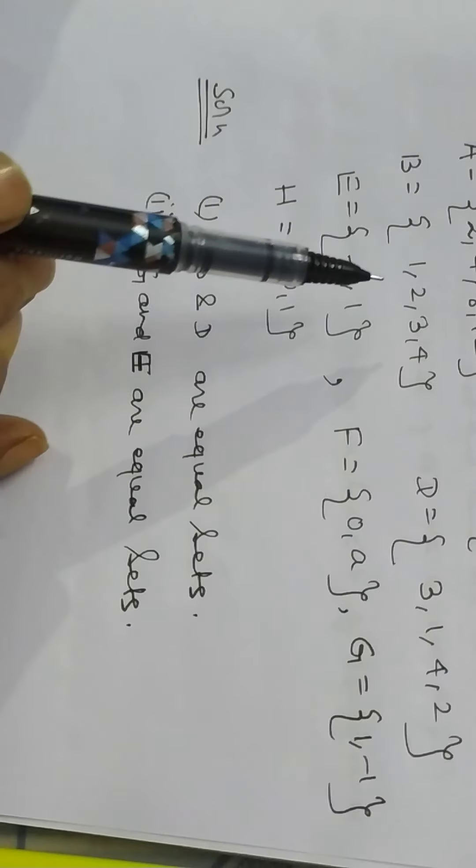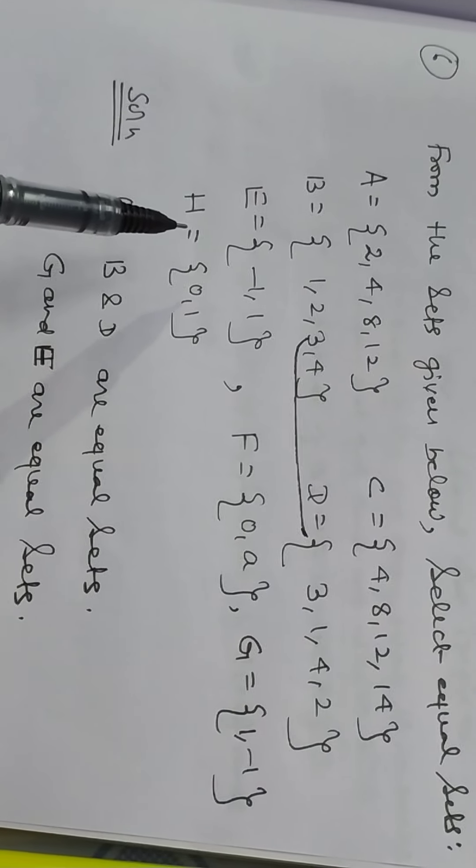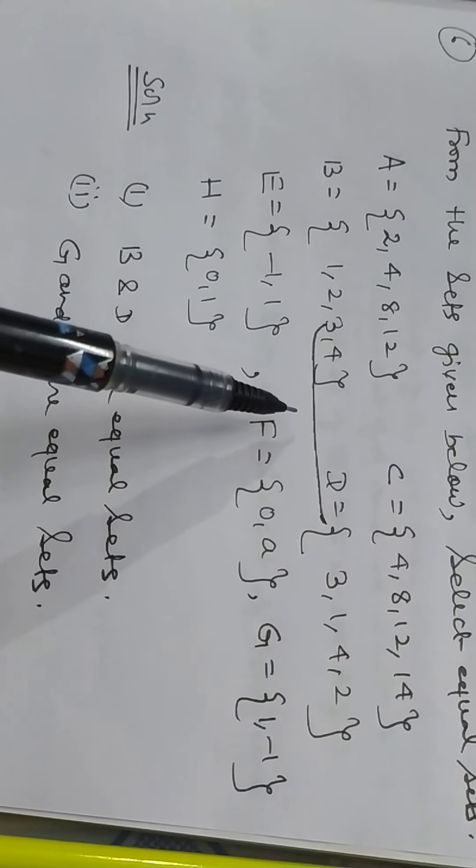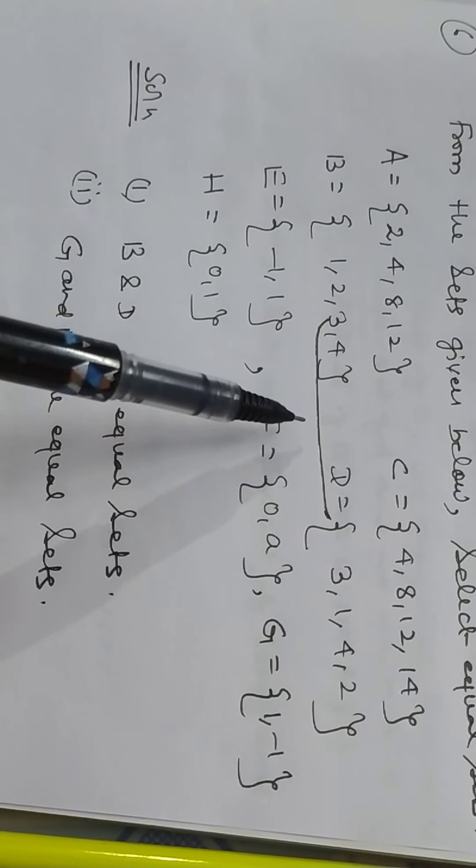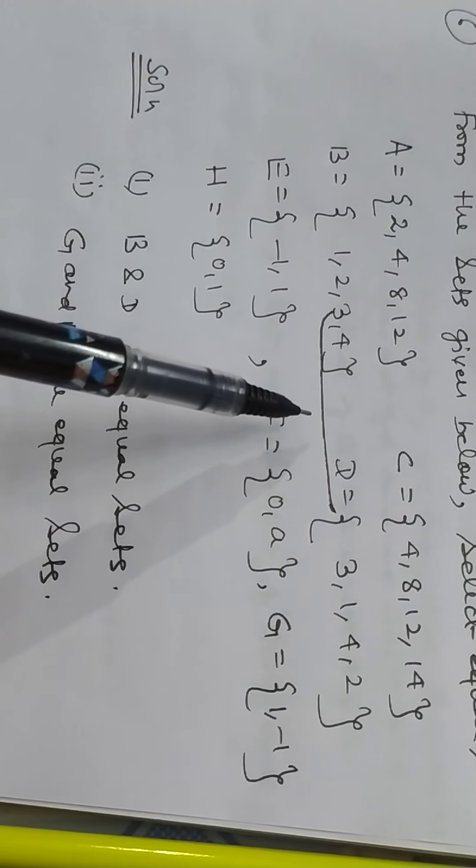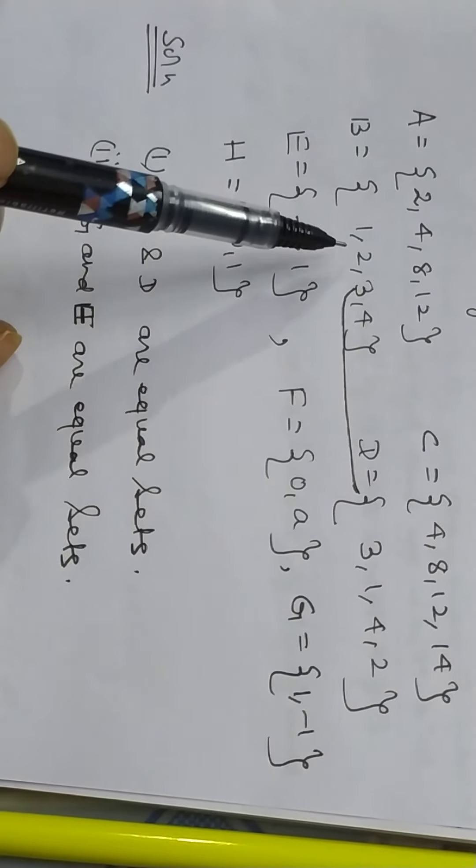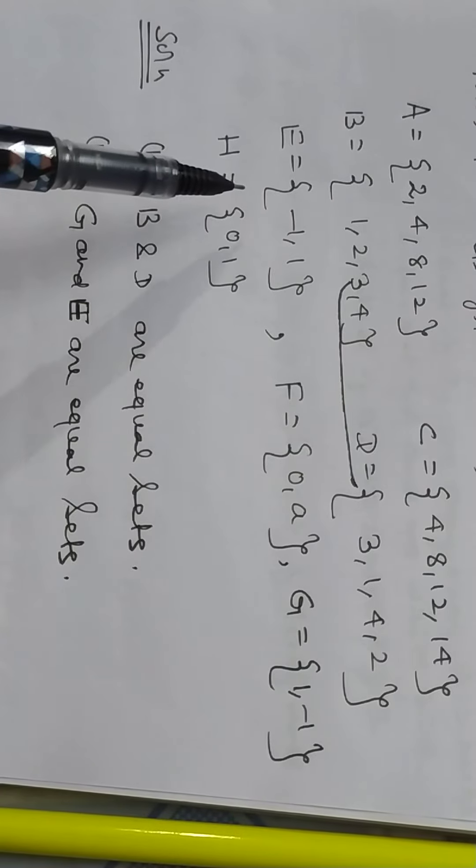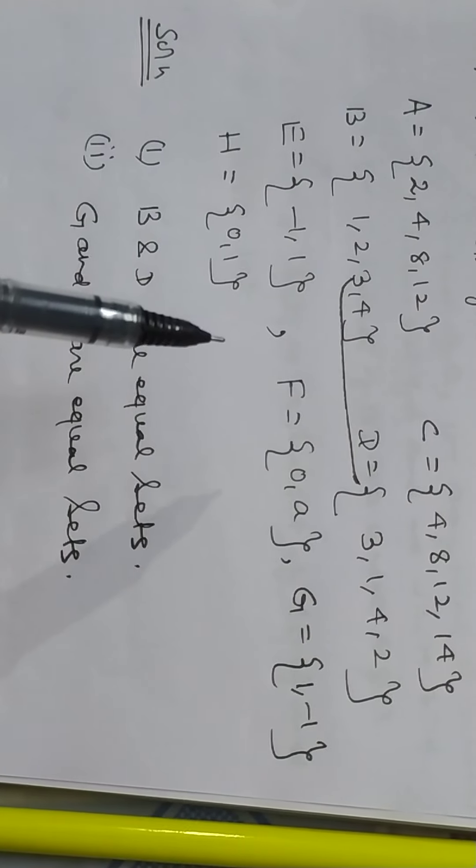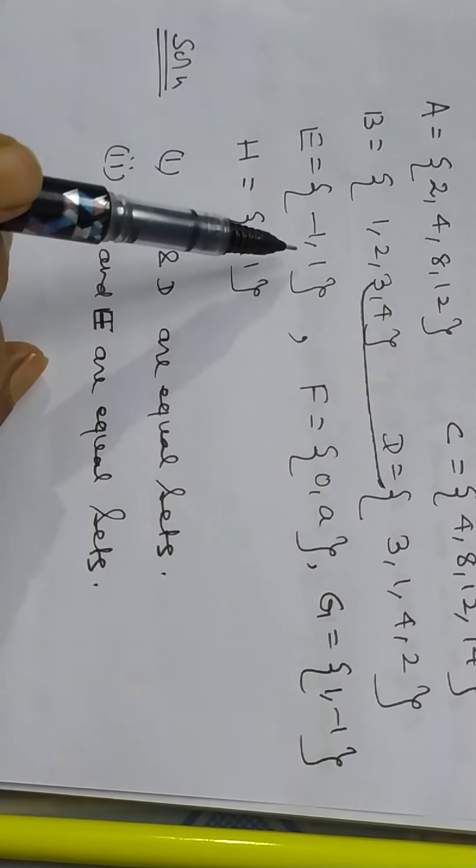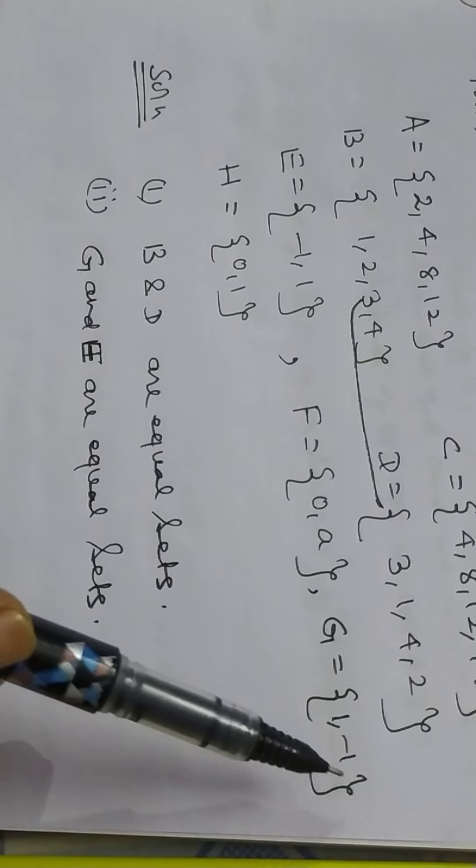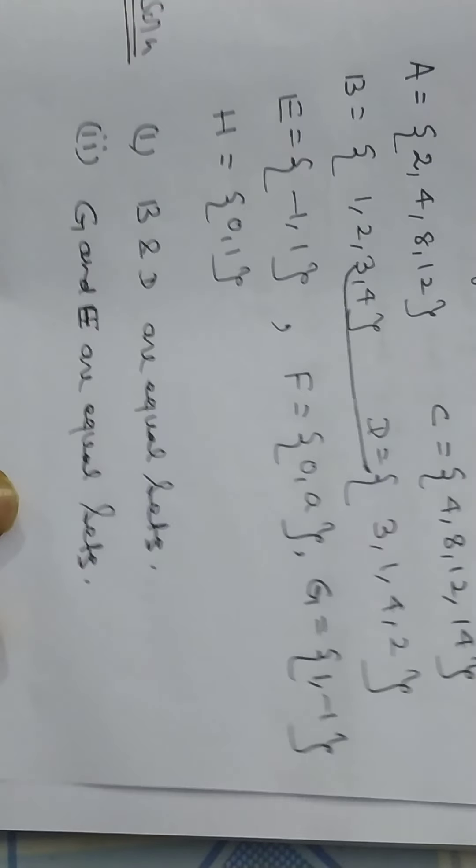B and D are equal sets. B and D are the elements of equal sets. We will not take care of the order of the numbers, only same elements should be present. Now G and E, E is minus 1 and 1, and G is 1 and minus 1. So in this way we can solve the problem six.